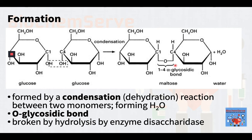On the other hand, breaking apart a double sugar into its two simple sugars is accomplished by hydrolysis, with the help of a type of enzyme called disaccharidases. Each disaccharide is broken down with the help of the corresponding disaccharidase — for example, sucrase, lactase, and maltase for sucrose, lactose, and maltose, respectively.